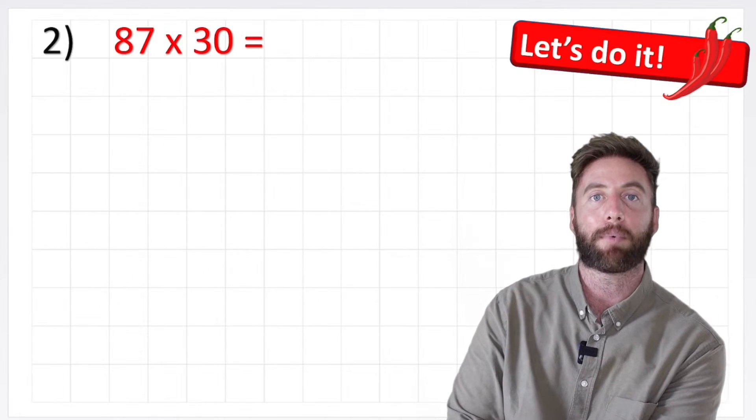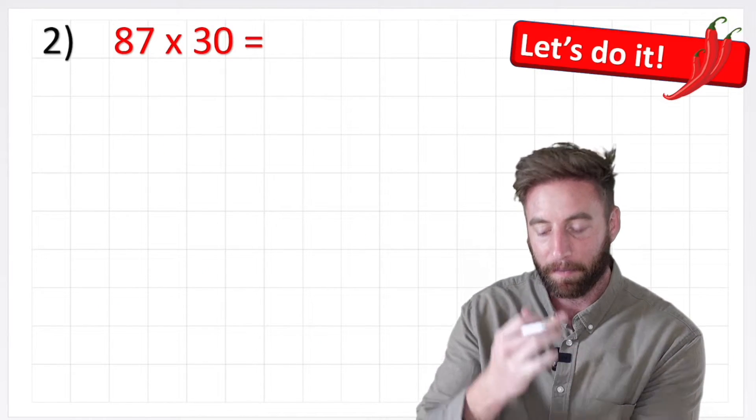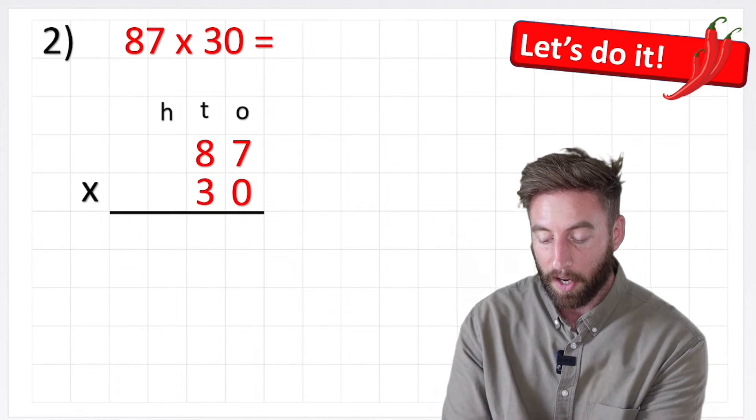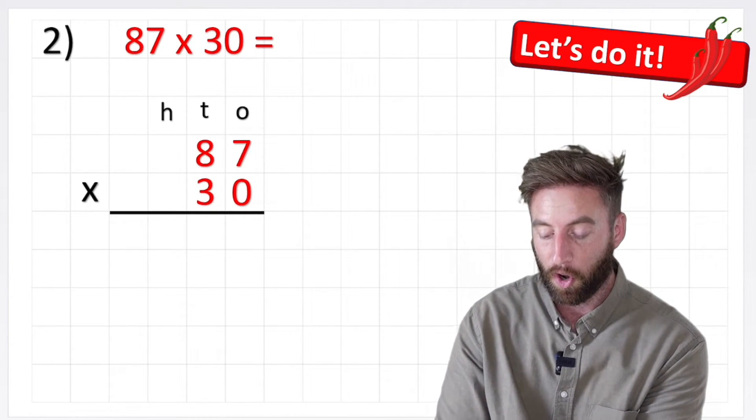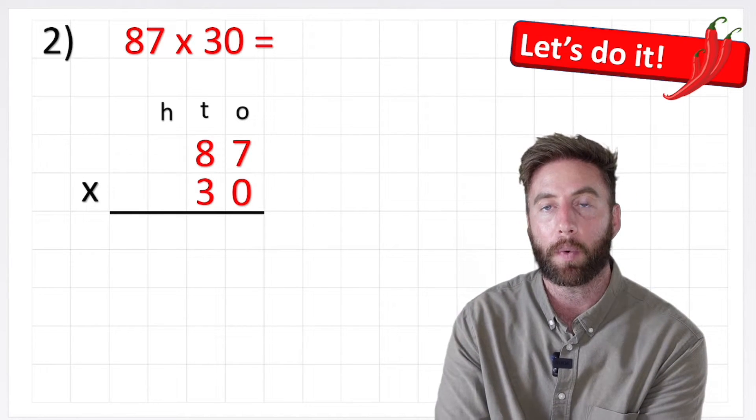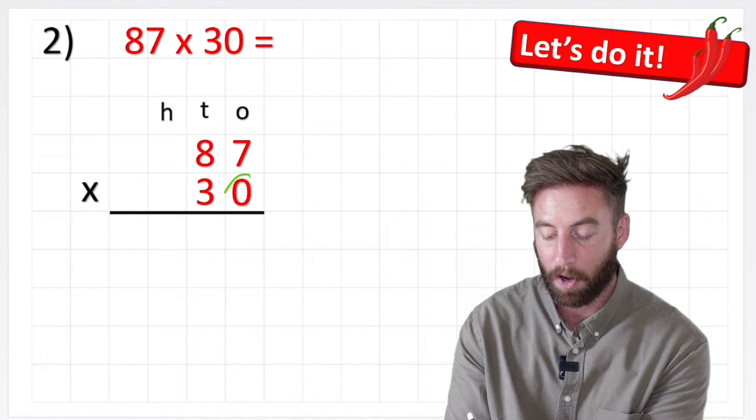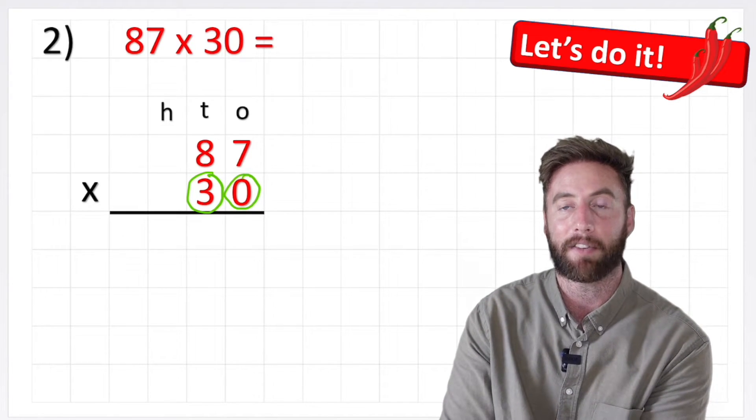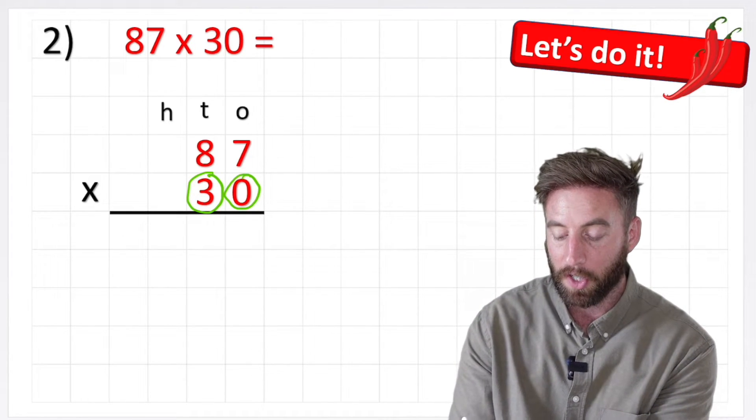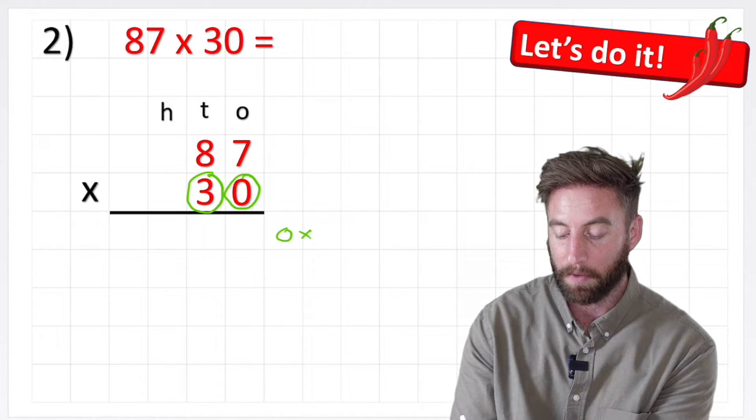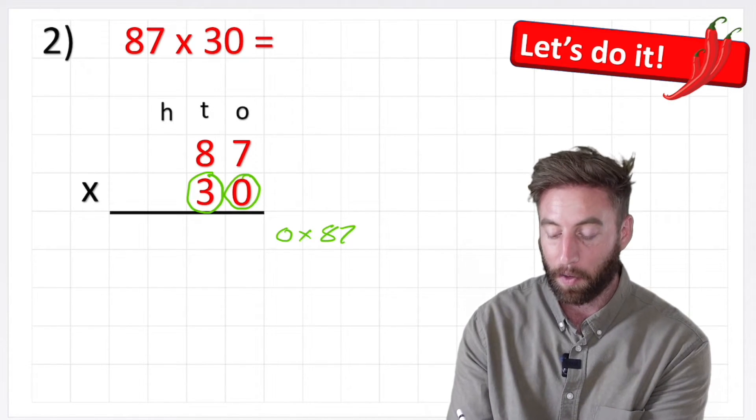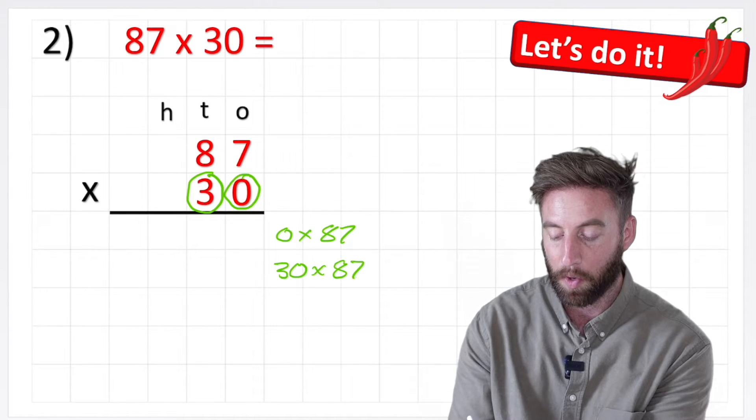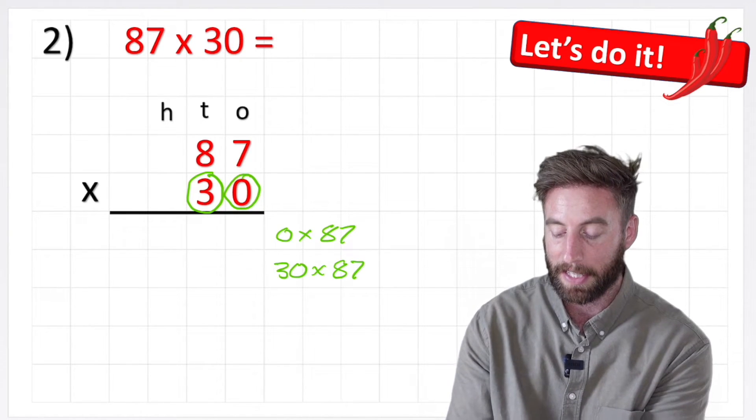Okay, let's look at our second example, 87 times 30. So same thing again, I'm going to lay out my numbers in their place value chart and I'm going to have my ones, tens and hundreds on the top, and then I'm going to partition my question into thinking about the 0 and the 3 separately, times them by 87 on their own. So the first question is 0 times 87 and the second one therefore would be 30 times 87, because we remember that this 3 is not a 3, it's a 30.